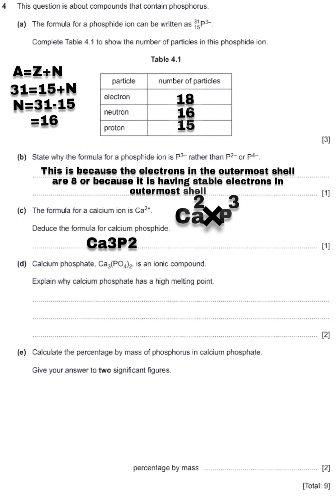Question D is saying: calcium phosphate is an ionic compound. Phosphate is a non-metal. Calcium is a metal. The bonding which exists between a non-metal and a metal is ionic bonding. Ionic compounds have a high melting point because of the attraction between a negative charge from non-metals and a positive charge from a metal.